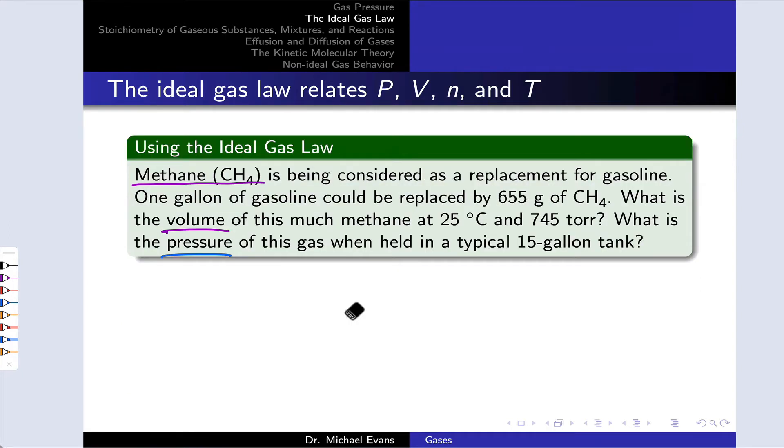Let's work a practice problem involving the ideal gas law. Methane is being considered as a replacement fuel for gasoline. One gallon of gasoline, in terms of energetic equivalent, could be replaced by 655 grams of methane, CH4. What we want to know is what is the volume of this methane at 25 degrees C and 745 torr? And then what is the pressure of this gas when we try to put it in a typical 15 gallon gas tank?